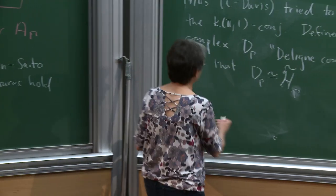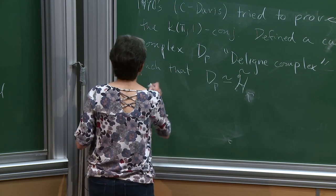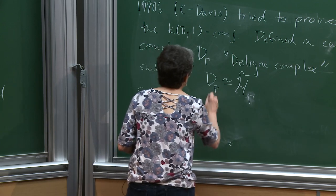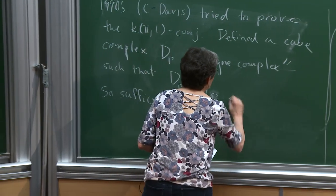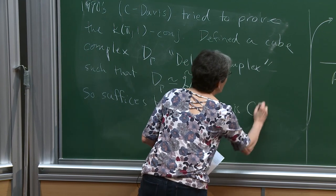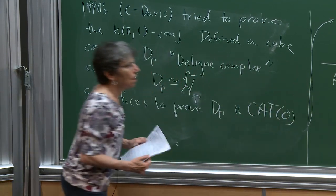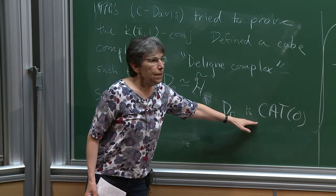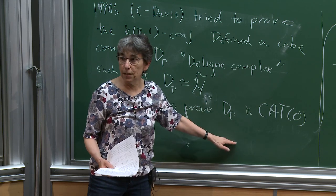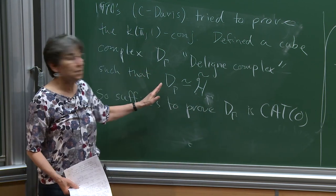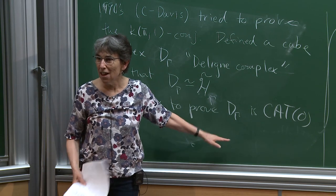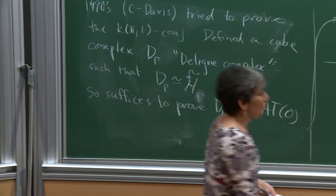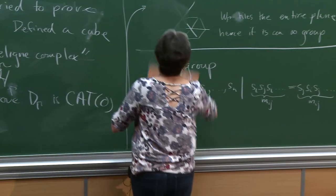We already know D_gamma is simply connected because it's homotopy equivalent to the universal cover. So we have a simply connected cube complex and want to prove it's contractible. The answer is just prove it's CAT(0), because every CAT(0) space is contractible. So it suffices to prove D_gamma is CAT(0). To prove it's CAT(0), we need it's non-positively curved and simply connected - we already have simply connected, so all we need is non-positive curvature.